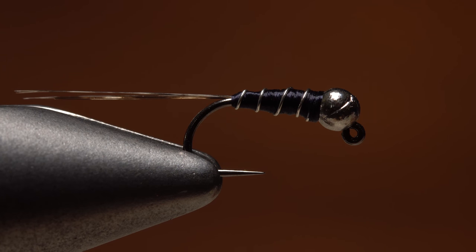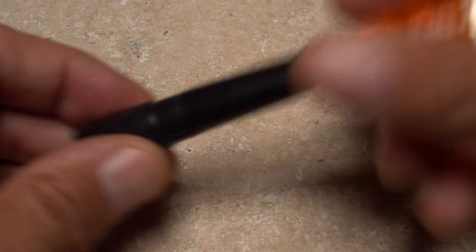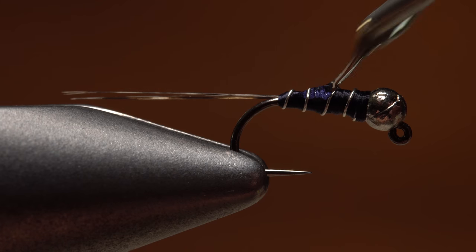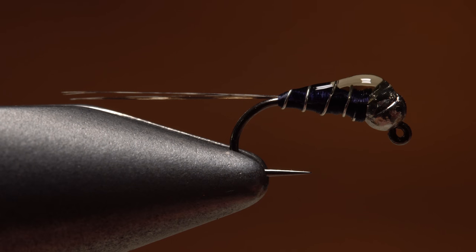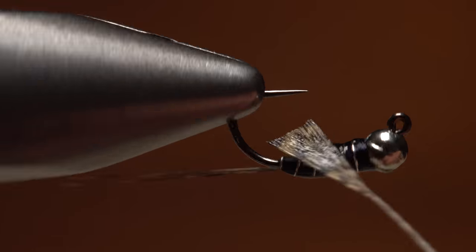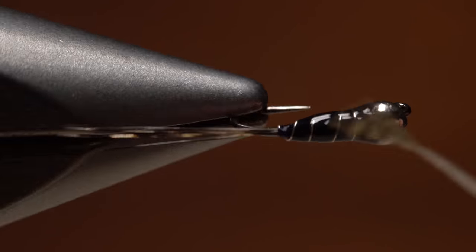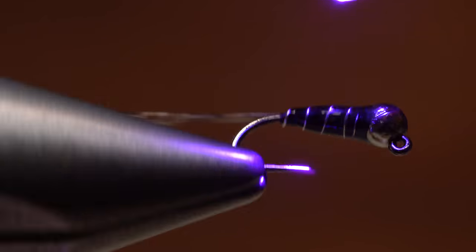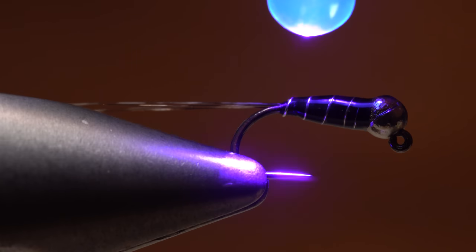You could probably use the fly just like this, but coating the body with your favorite UV-Cure resin will increase durability and streamline the fly so it sinks faster. After applying an ample drop of resin, I'll use a cut off little piece of feather, here, wood duck, as a micro brush to push the resin evenly over the entire body and then use the UV torch to cure the resin.